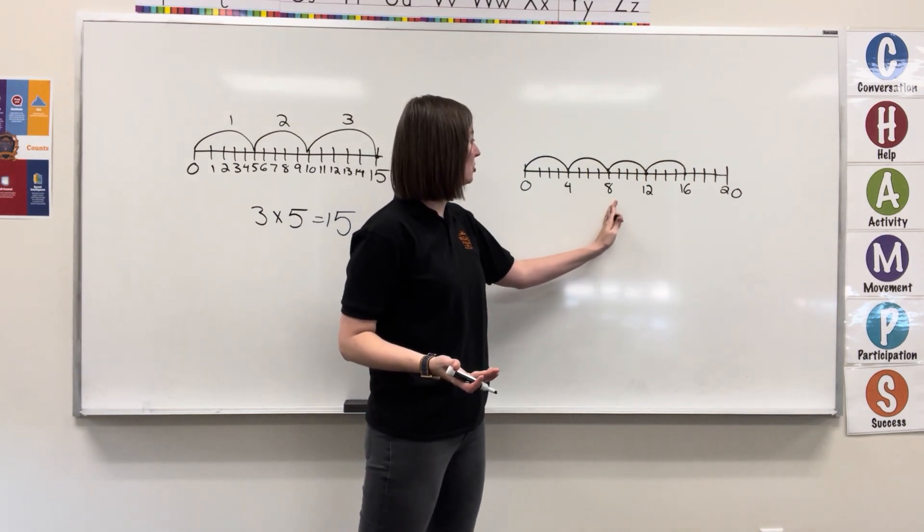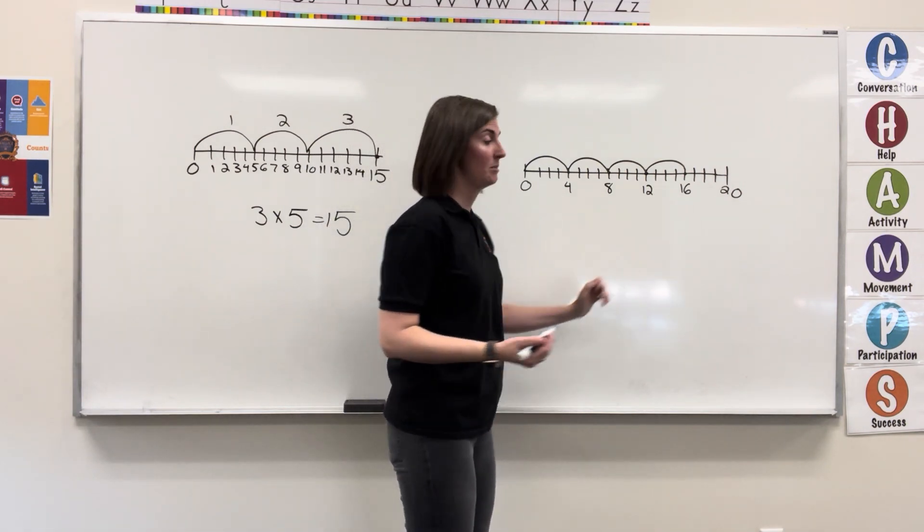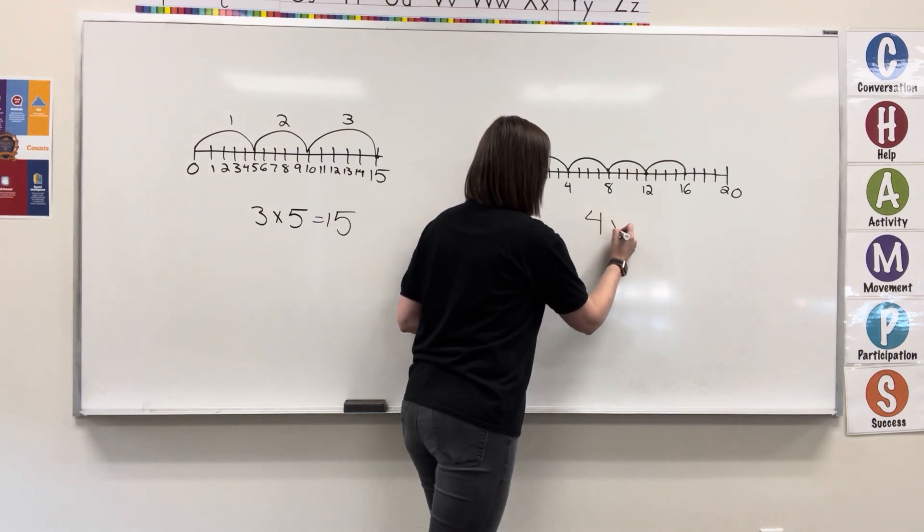I've jumped 1, 2, 3, 4 times. So my first factor is 4. Now how many are in each jump?